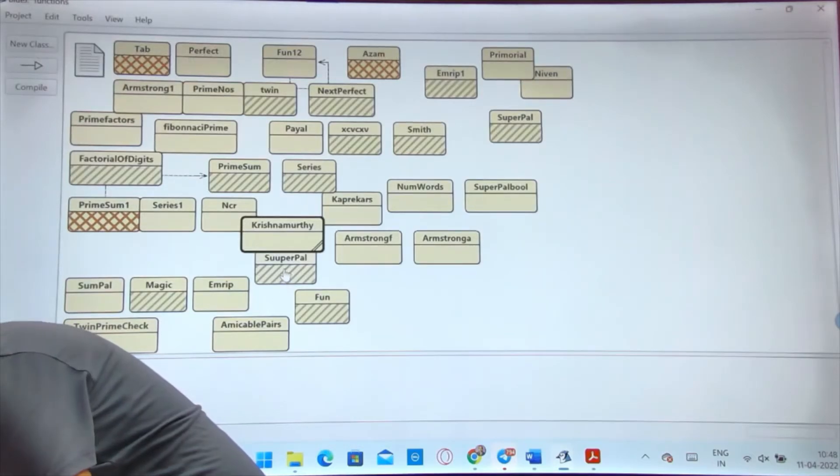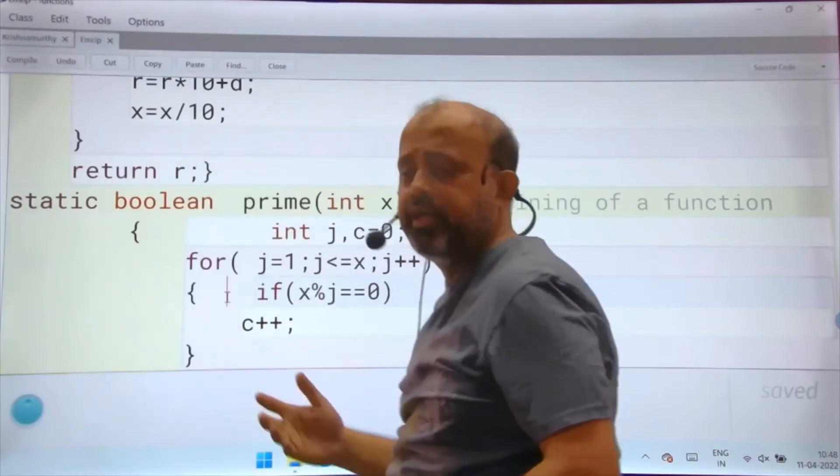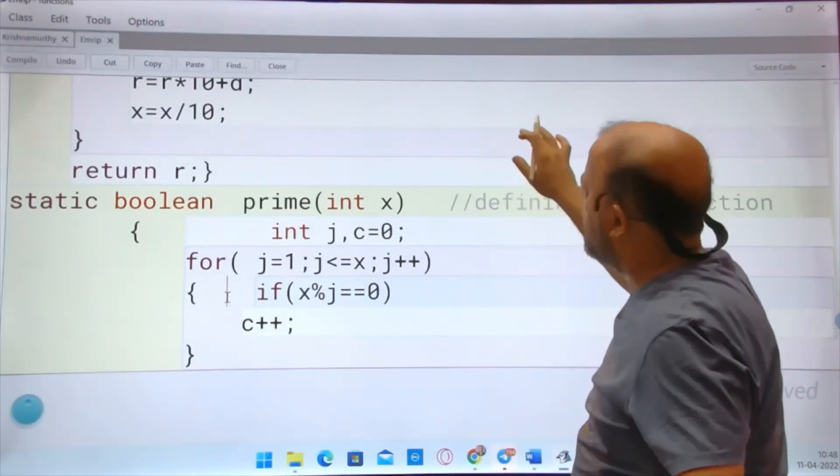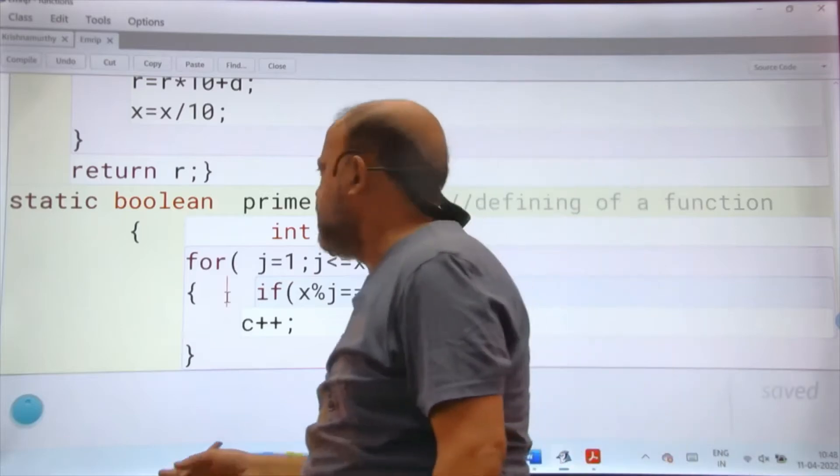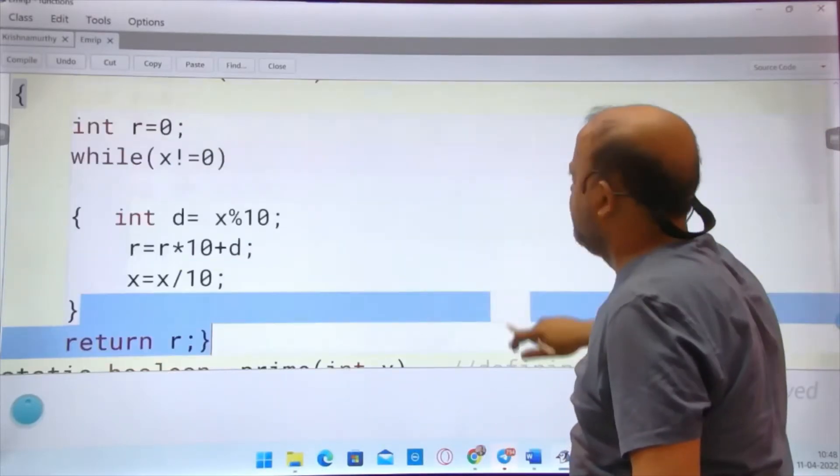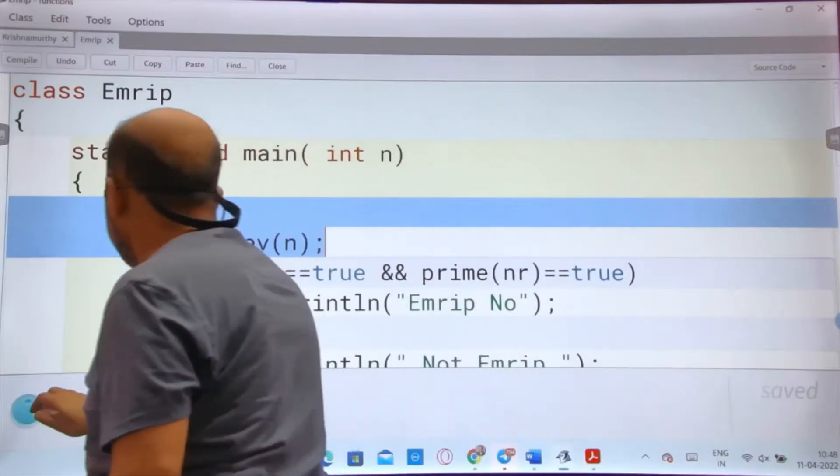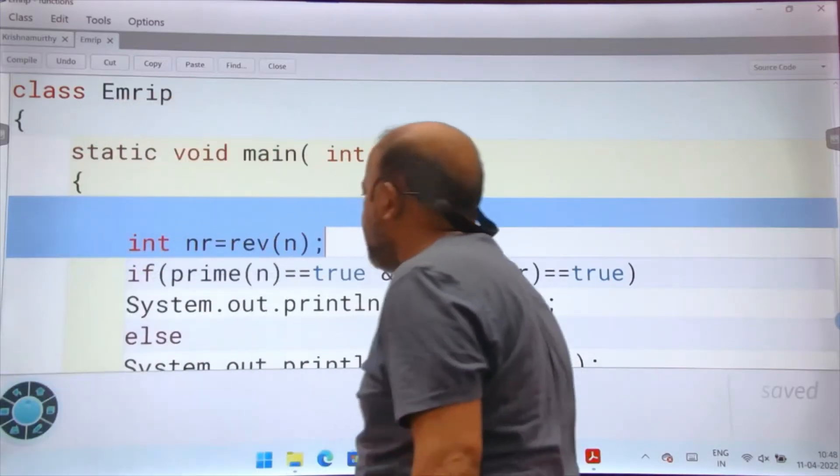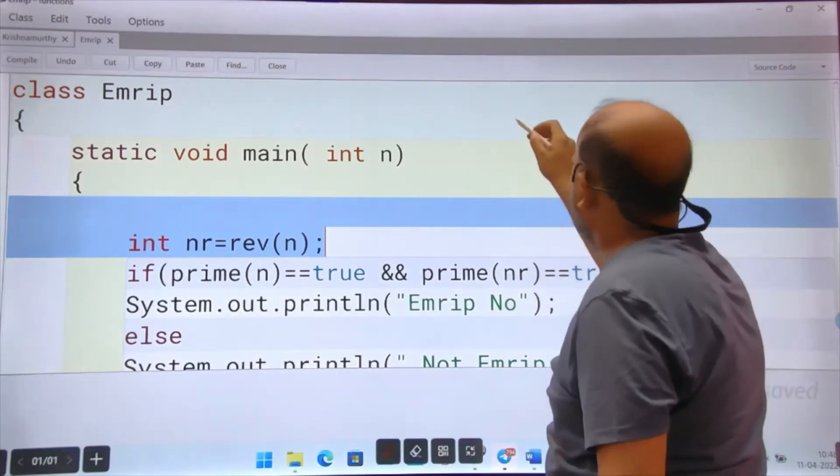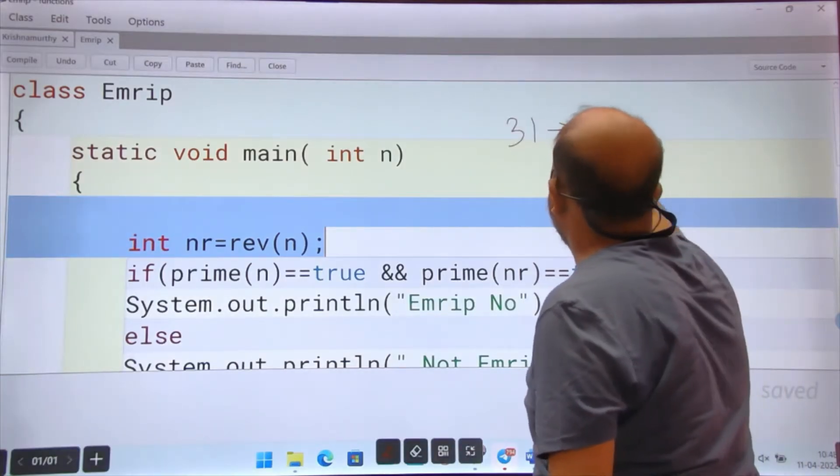Now there are many programs which can be done using return type. Next program, I hope this is the last program in this video I am explaining in functions. See the program is Emirp number. Now you should know what is an Emirp number. Suppose 31 - 31 is prime.